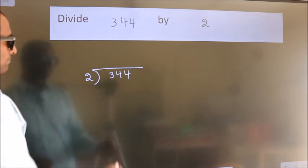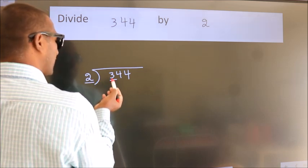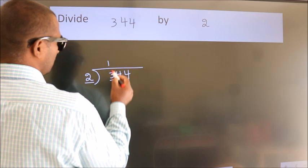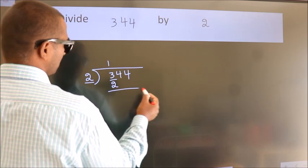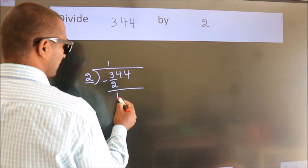Next. Here we have 3, here 2. A number close to 3 in 2 table is 2 1s, 2. Now we should subtract. We get 1.